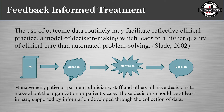Feedback-informed treatment is really important. The use of outcome data routinely may facilitate reflective clinical practice — a model of decision-making which leads to higher quality clinical care than automated problem solving. When you're gathering data, you can start asking questions and those questions can be informed with information you've gathered. Your clinical team can then make informed decisions, and you as a clinician will have data to back up the decisions you're making with your clients. It unifies your entire organization so that you have supported information when making decisions.